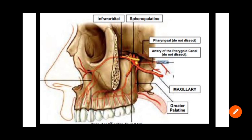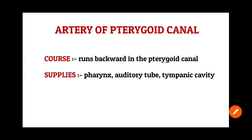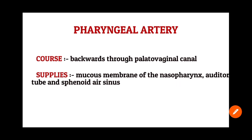The remaining two branches are the artery of pterygoid canal and the pharyngeal artery, both of which run backwards. The artery of pterygoid canal runs into the pterygoid canal and supplies the auditory tube and the tympanic cavity. The pharyngeal artery runs into the palatovaginal canal and supplies the nasopharyngeal region, the auditory tube, and the sphenoid air sinus.